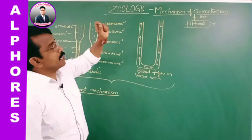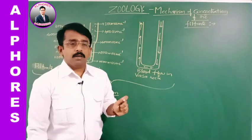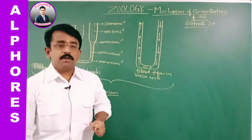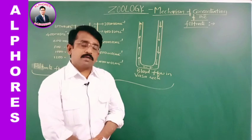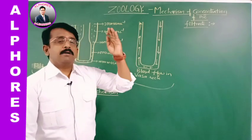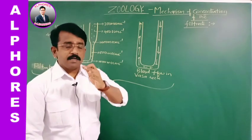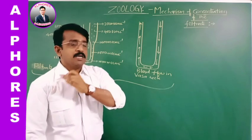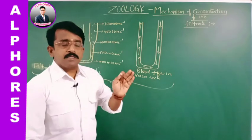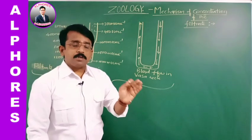That is nothing but the mechanism of concentration of the filtrate. We discussed that in the renal tubule, as the filtrate flows through different parts, selective reabsorption as well as tubular secretion takes place. The filtrate formed by glomerular filtration, or ultrafiltration, is subjected to selective reabsorption in different parts of the renal tubule — that is, in the PCT, the filtrate becomes isotonic to blood plasma.